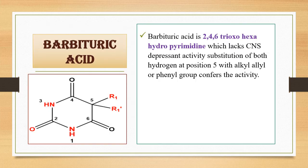Barbituric acid is itself a 2,4,6-trioxohexahydropyrimidine, meaning it is a derivative of pyrimidine in which the 2nd, 4th, and 6th positions are substituted by carbonyl oxygen. Barbituric acid itself does not have any CNS depressant, hypnotic, or sedative activity. But its sedative, hypnotic, and antidepressant activity can be enhanced by substitution at the C5 position.